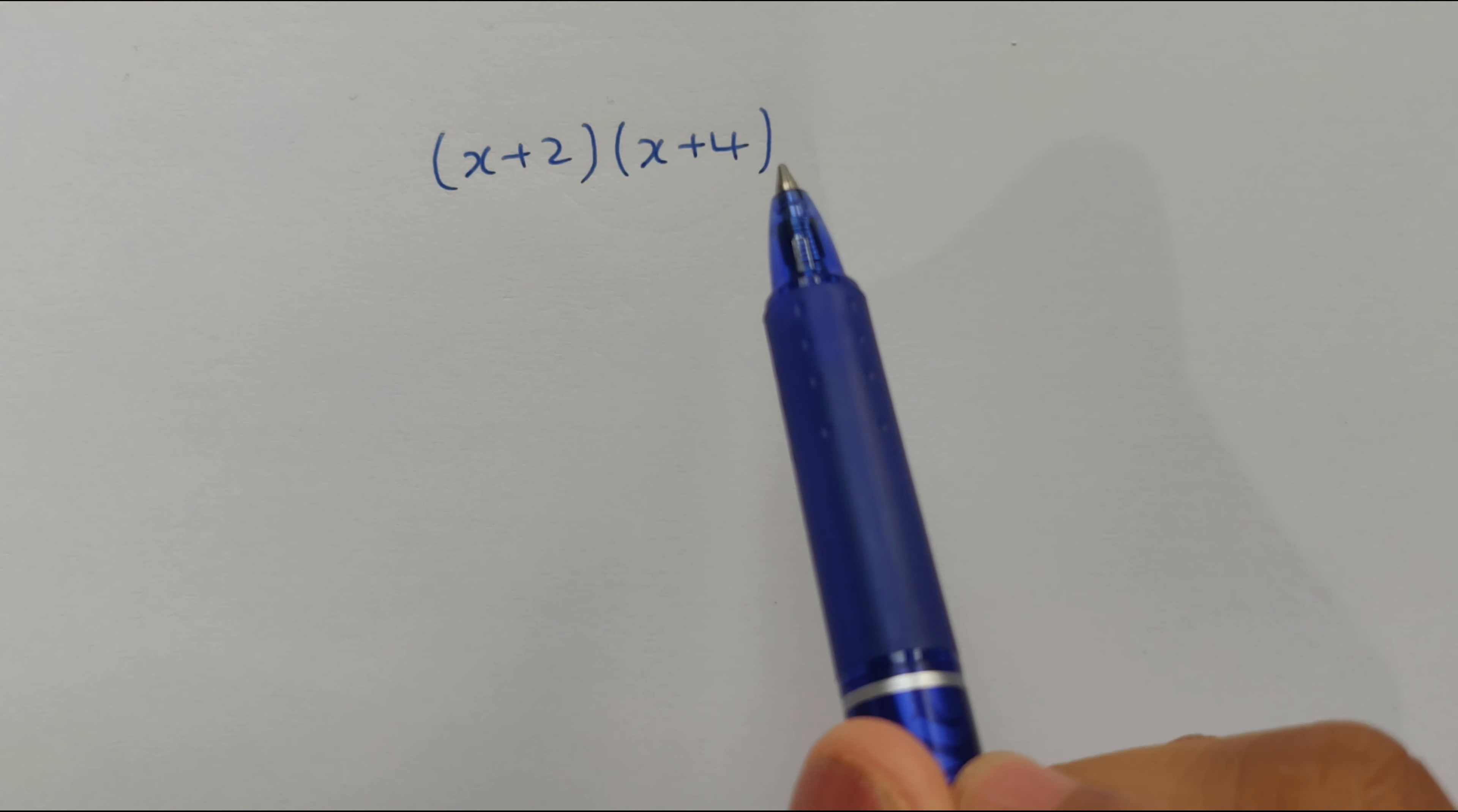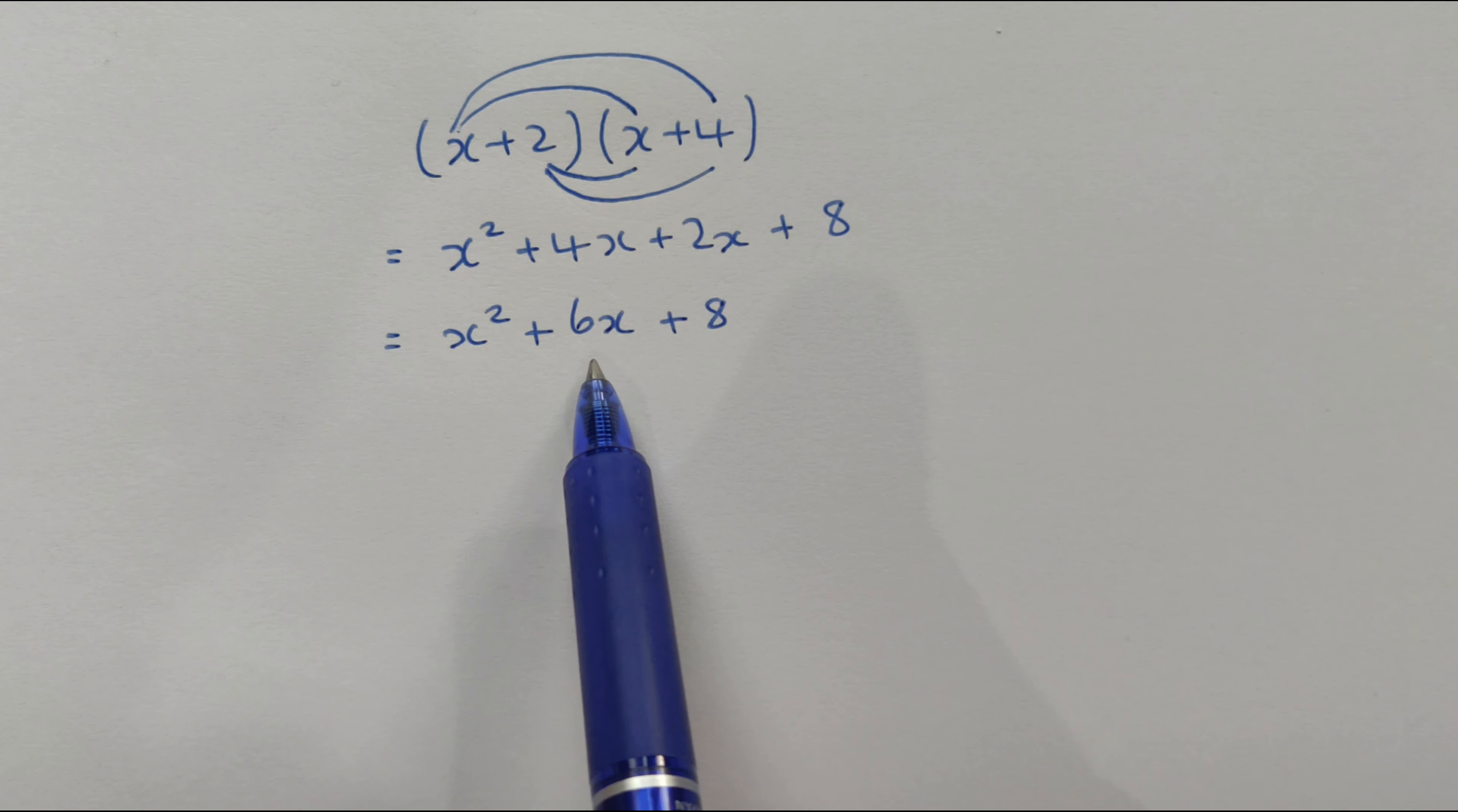So, now we simplify this. We get x squared. So, 4x and 2x are like terms, so we can add them together. We get x squared plus 6x plus 8. So, when we expand x plus 2, x plus 4, we get x squared plus 6x plus 8.